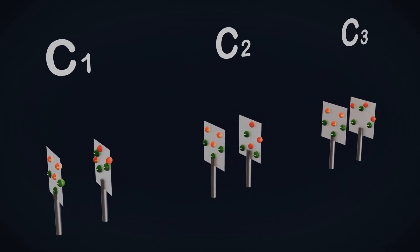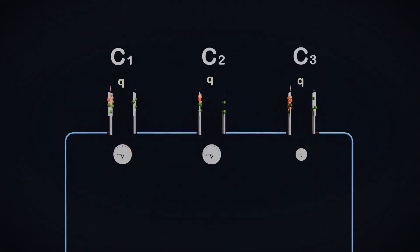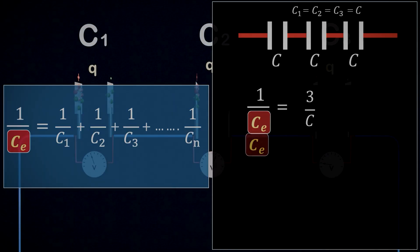Now, while series combinations can be helpful in certain situations, like voltage division or achieving specific voltage ratings, they tend to result in a lower equivalent capacitance. So, let's jump into it. And I promise, it's going to be just as fascinating as last time.